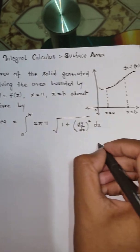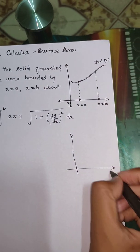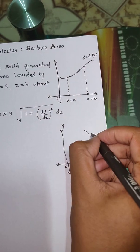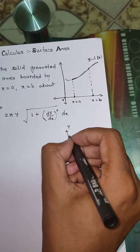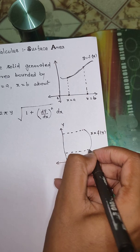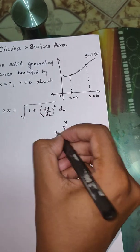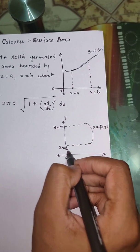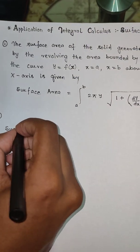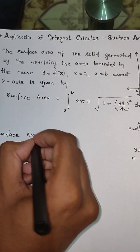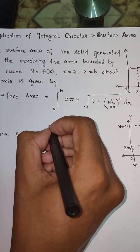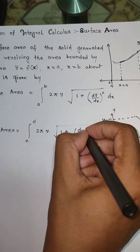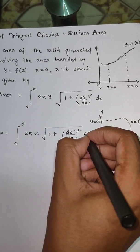Now suppose you have a curve x = f(y). When we revolve this curve about the y-axis from ordinate y = c to y = d, then its surface area about the y-axis is given by: Surface Area = ∫[c to d] 2πx √(1 + (dx/dy)²) dy.